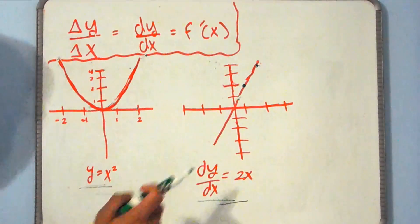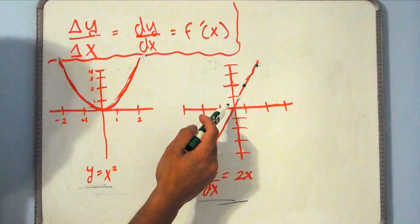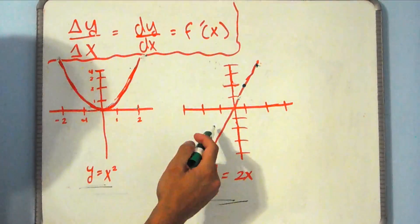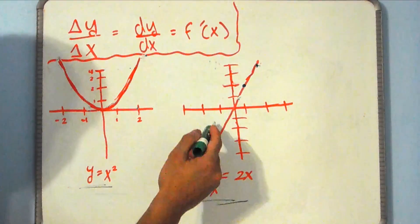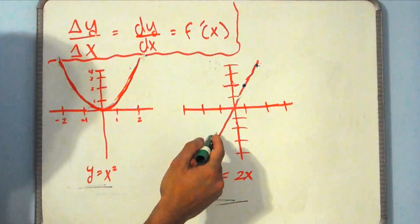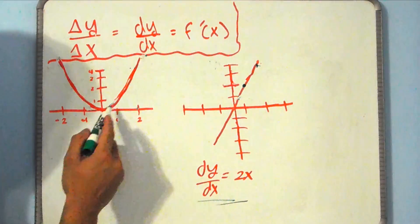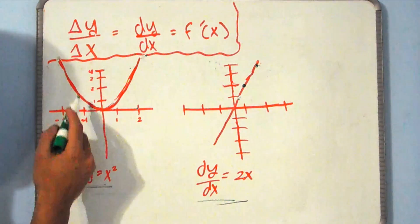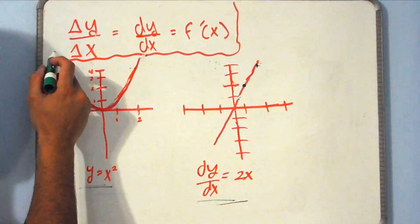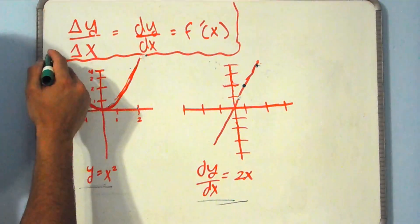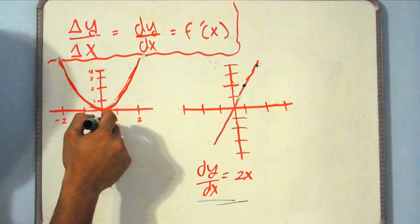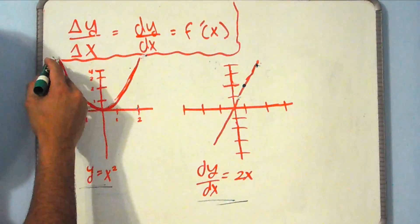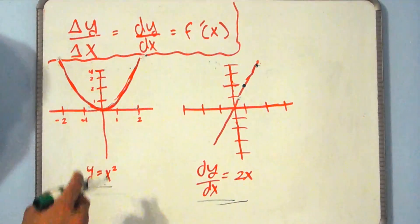And in the same way, if we take an x coordinate less than 0 on this graph, we see that the y coordinate is negative. In the same region here, we see that the function is decreasing — negative slopes, the slope is decreasing and negative.